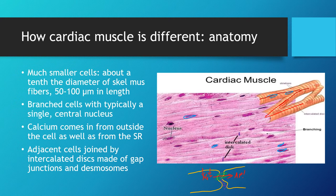The other major connection at intercalated discs is desmosomes, which are like the protein versions of couplings between train cars. They connect into the myofibrils in each muscle cell so that as one cell contracts and the next contracts, they don't rip apart — they pull on each other and cause the whole heart to contract at the same time.